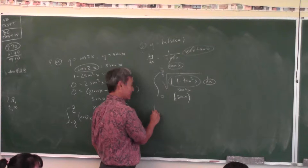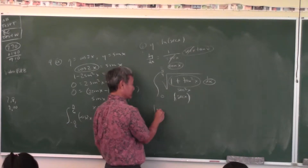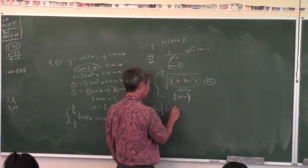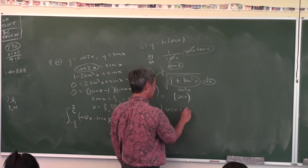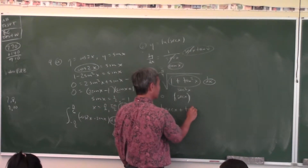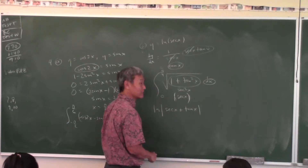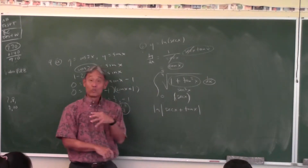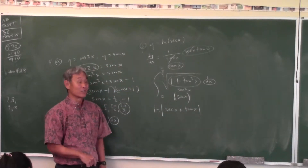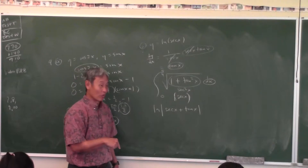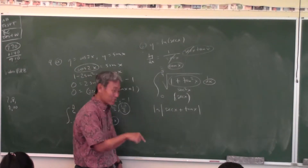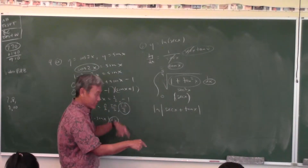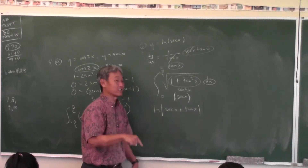Hanuman, redeem yourself. The integral of secant x is natural log absolute value of secant x plus tangent x. Tran, how come you don't know that? Believe me, I'm going to test you on everything — u-substitution, integration by parts, trig substitution, partial fractions.